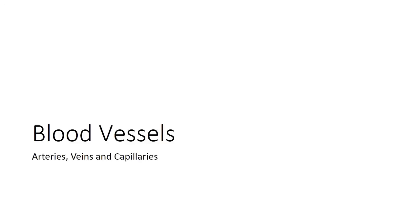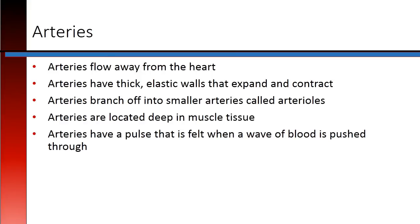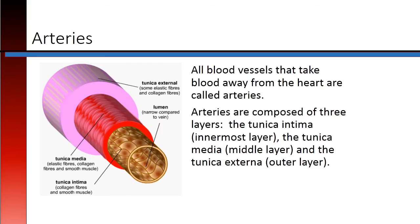Blood vessels: arteries, veins, and capillaries. The blood travels to all the body's tissues from the aorta through arteries, which branch into smaller arterioles, which become even smaller capillaries. Arteries flow away from the heart. They have thick elastic walls that expand and contract. They branch off into smaller arteries called arterioles, and they are located deep in muscle tissue. Arteries have a pulse that is felt when a wave of blood is pushed through. All blood vessels that take blood away from the heart are called arteries.